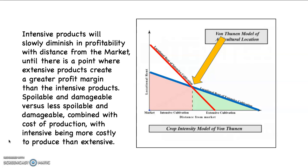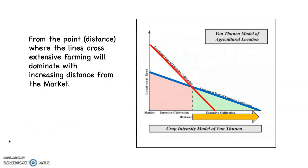Spoilable and damageable products versus less spoilable and less damageable products combined with the cost of production with intensive being more costly to produce than extensive. So what that means is this. From where those two lines cross, so where the red line and the blue line cross, the intensive and extensive agricultural products, from that point as you increase distance from the city as is indicated by the bronze arrow, extensive agricultural products are going to dominate. Nobody's going to grow intensive products out there because you won't be able to make a profit, but you can still make a profit with extensive products.